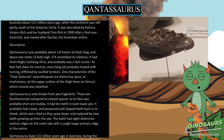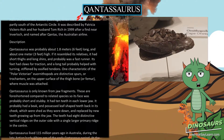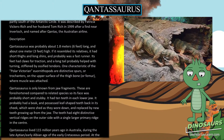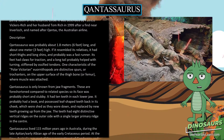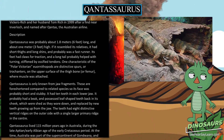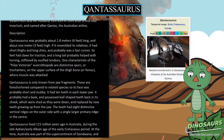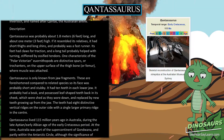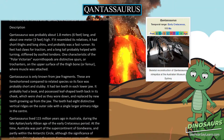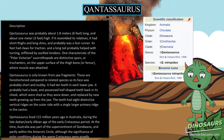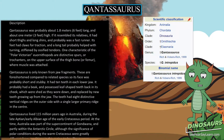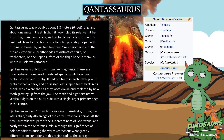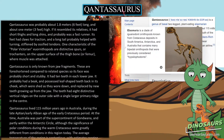One characteristic of the polar Victorian euornithopods are distinctive spurs, or trochanters, on the upper surface of the thigh bone, or femur, where muscle was attached. Qantasaurus is only known from jaw fragments. These are foreshortened compared to related species, so its face was probably short and stubby. It had ten teeth in each lower jaw.